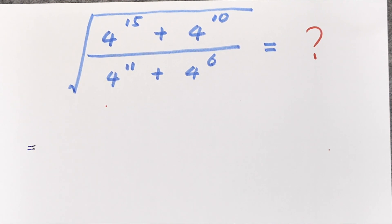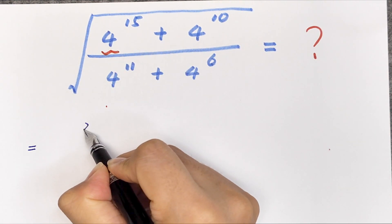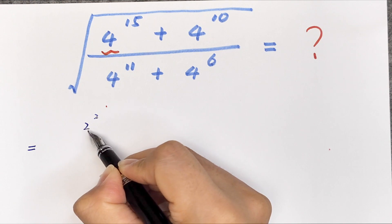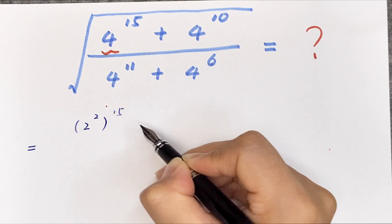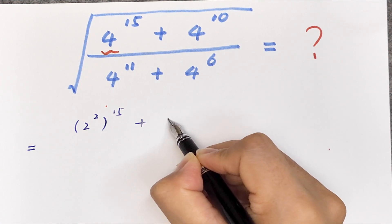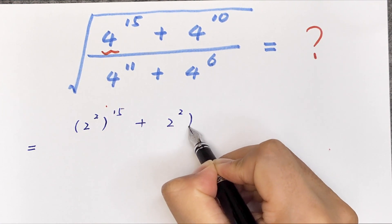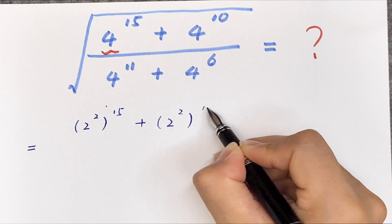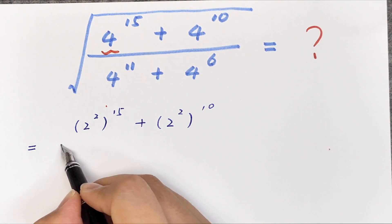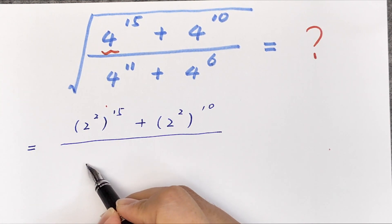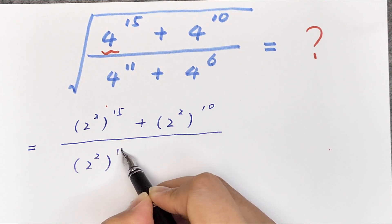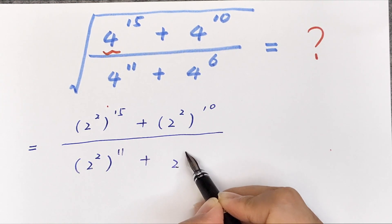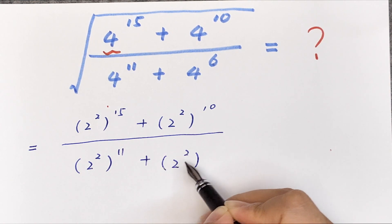It will be equal to: since 4 is (√2)² or 2 squared, we rewrite each term — (2 squared) to the power of 15 plus (2 squared) to the power of 10, divided by (2 squared) to the power of 11 plus (2 squared) to the power of 6.